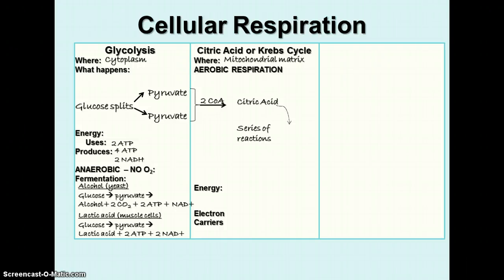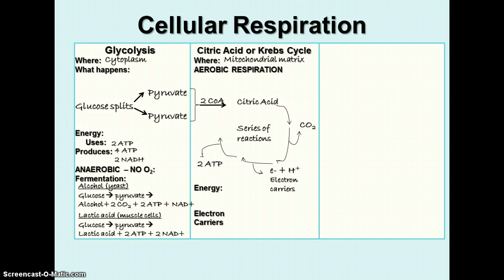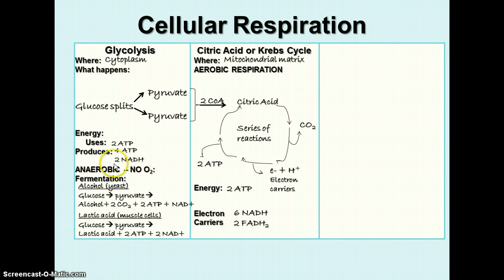The citric acid goes through a series of reactions where molecules are rearranged, some carbon dioxide is produced, and some electrons and protons are passed to electron carriers NADH and FADH2. A little bit of ATP is produced, and it comes back to the starting compound. The energy produced in the citric acid cycle is two molecules of ATP, and in terms of electron carriers, we have six NADH and two FADH2s, which will go to the electron transport chain to produce more ATP.